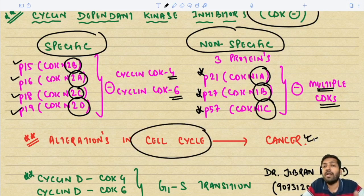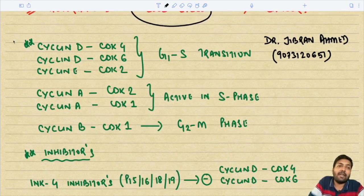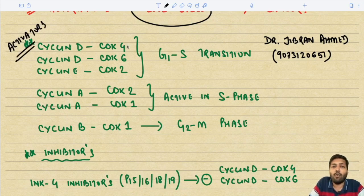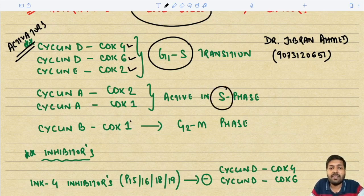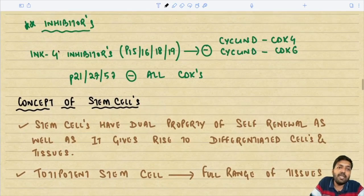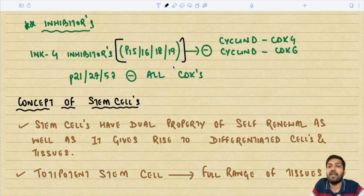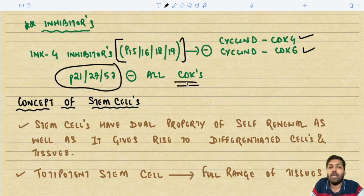The activators of the cell cycle include: cyclin D/CDK4 and cyclin D/CDK6 complexes, and cyclin E/CDK2, which promote G1/S transition. Cyclin A/CDK2 and cyclin A/CDK1 are active during S phase. Cyclin B/CDK1 is active during the G2/M phase. The INK4 inhibitors — p15, p16, p18, p19 — specifically inhibit cyclin D/CDK4 and CDK6 complexes, while p21, p27, and p57 inhibit all varieties of cyclin-dependent kinases.